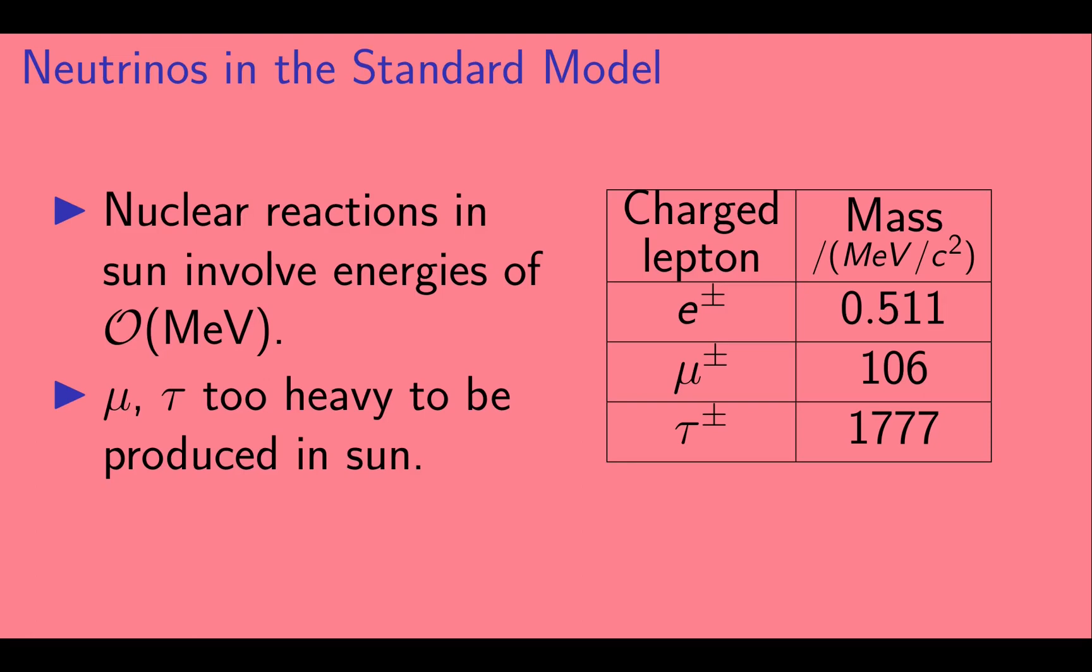But a muon's rest energy is 106 MeV, and a tau's rest energy is almost 1800 MeV. There simply isn't enough energy in nuclear reactions in the Sun to make a muon or a tau particle.